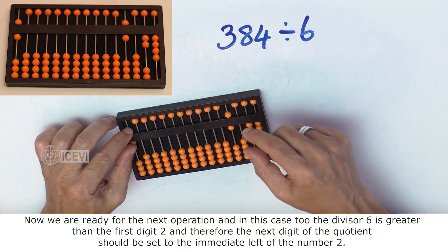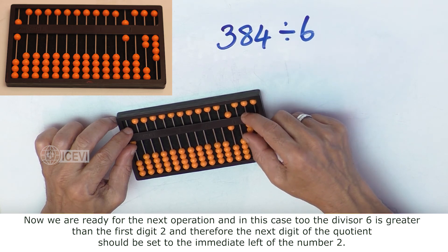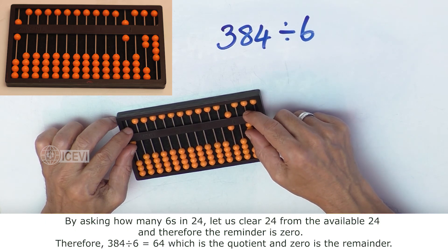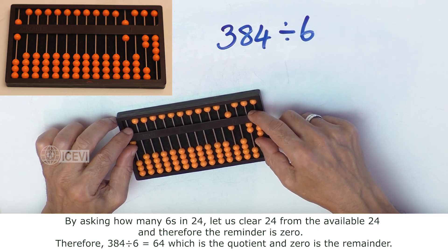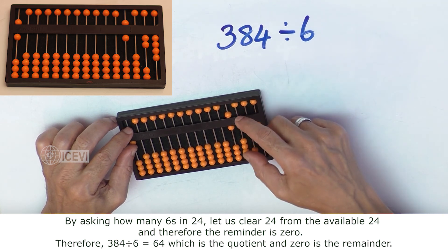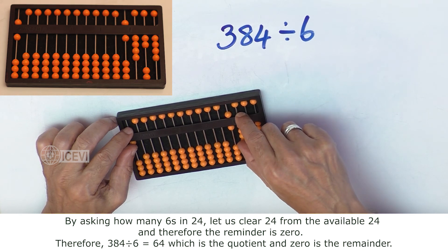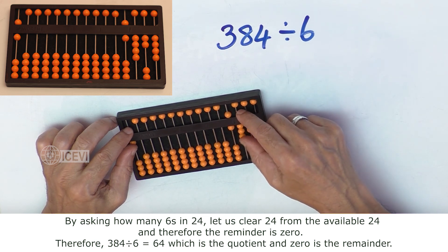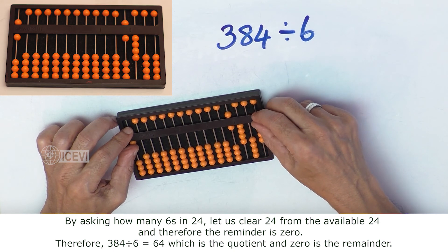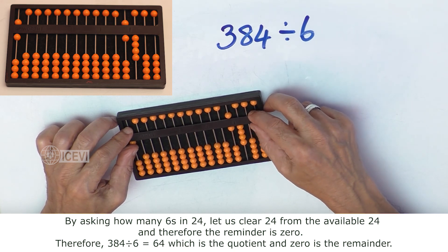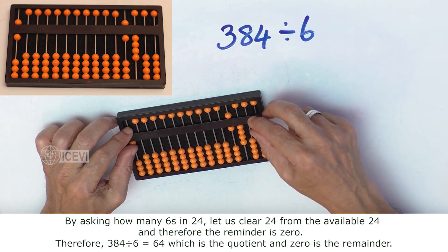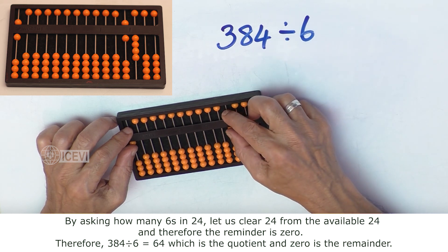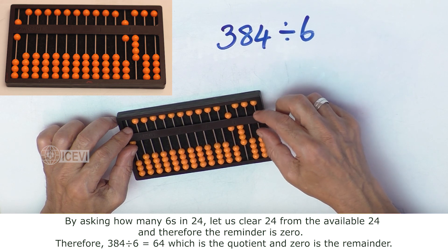28. And therefore, the next digit of the quotient should also be set to the immediate left of the number 2. By asking how many 6s in 24, let us say 4 and set that 4 in the quotient area — that is, to the right of 6 — and then clear 24. Now the remainder is 0. Therefore, 384 divided by 6 is 64 and there is no remainder.